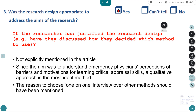Was the research design appropriate to address the aims? The researcher should have justified the research design and discussed how they decided which method to use. Although not explicitly mentioned in the article, since the aim was to understand people's perspectives, barriers, and motivations, a qualitative approach is more suitable. However, they could have mentioned why they chose one-on-one interviews over other methods, such as focus group discussions or qualitative observations of physicians at work.